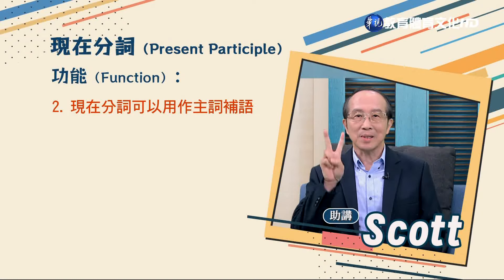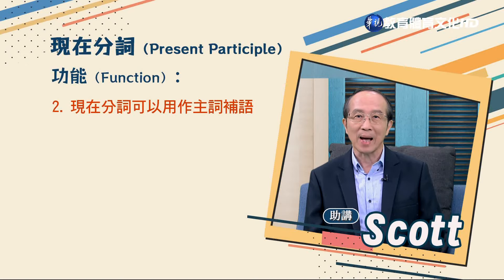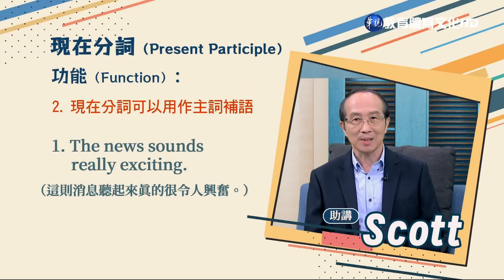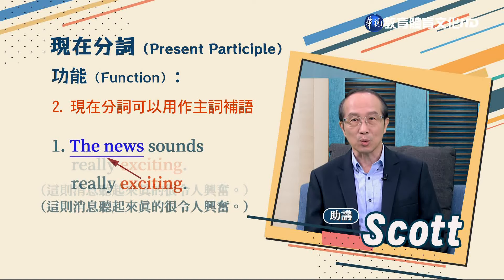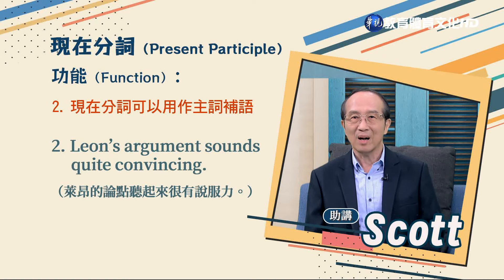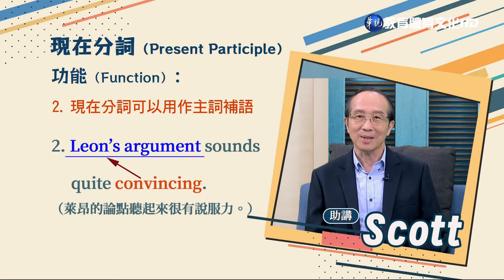現在分詞的第二個功能是用作主詞補語，用來補充說明主詞的狀態或情況。例句：「The news sounds really exciting.」這消息聽起來真的很令人興奮，exciting是現在分詞，充當主詞the news的補語。「Leon's argument sounds quite convincing.」里昂的論點聽起來很有說服力，convincing是現在分詞，充當Leon's argument的補語，描述其說服力的性質。